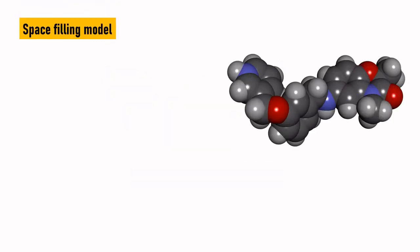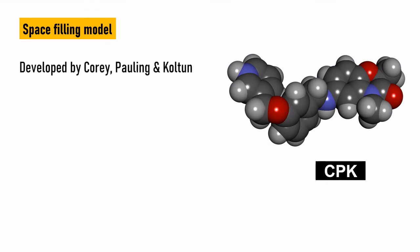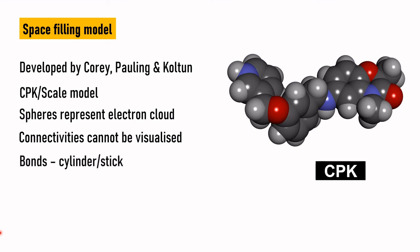Next we have space filling model. This space filling model is also known as CPK, which was developed by the three scientists Corey, Pauling, and Koltun. Therefore it is known as CPK model. It is also known as scale model. The model is based on spheres that represent the electron cloud. It is possible to visualize the extent of the molecule. This CPK model helps to understand to what extent the molecule is occupied in the space. The connectivities between the atoms and molecules cannot be visualized. These atomic spheres can be determined from the van der Waals radius, which indicate the most stable distance between two atoms. This is about space filling model.